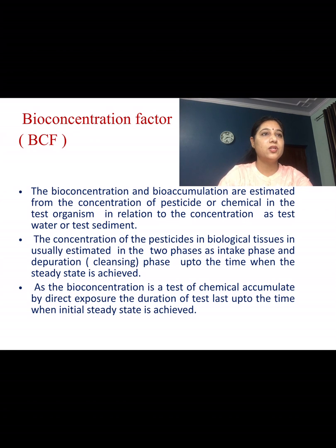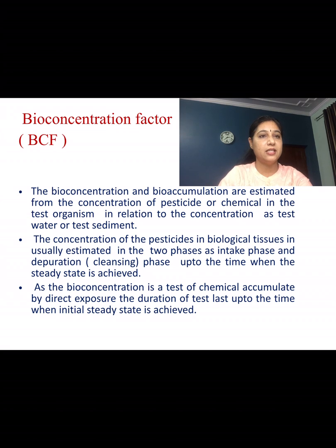The bioconcentration and bioaccumulation are estimated from the concentration of pesticide or chemical in the test animal relative to its concentration in the test water or sediments. The concentration of pesticide in biological tissues is estimated in two phases: the intake phase and the depuration or cleansing phase, up to the time when the steady state or equilibrium is achieved. The duration of the test lasts until the initial steady state is reached.